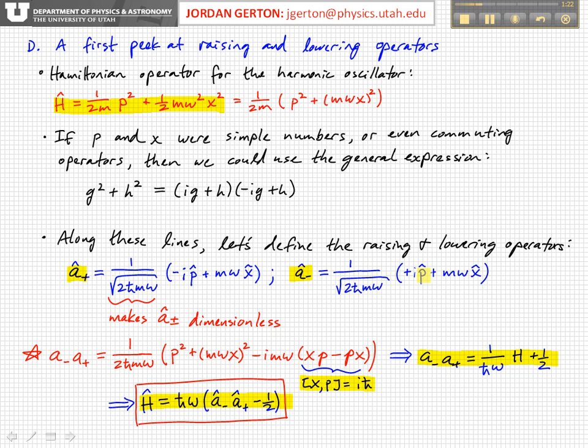What we found was that if you combine the lowering and raising operator this way, a minus a plus, and you realize that this quantity xp minus px, remember these are operators, this is the commutator of x and p, and we showed that that is equal to i times h bar, and that allows us to write a minus a plus like this. When we rearrange that, we get another way of writing the Hamiltonian operator equal to h bar omega times the lowering operator times the raising operator minus a half.